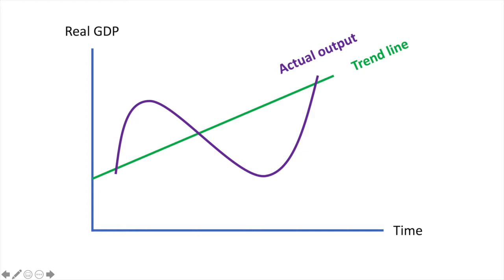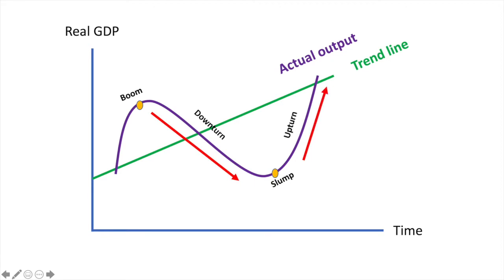When actual output exceeds potential output by the greatest amount, we have a boom. On the other end, when real GDP is farthest from the potential GDP, you have an economic slump. In between we have economic downturns and upturns. We'll take each of these in turn and look at what is happening with economic indicators as we move from one stage to the next.